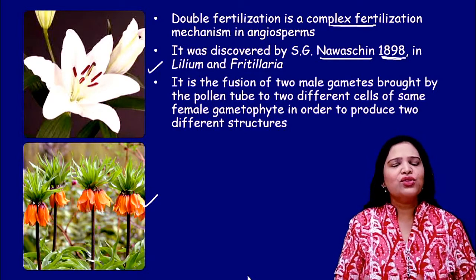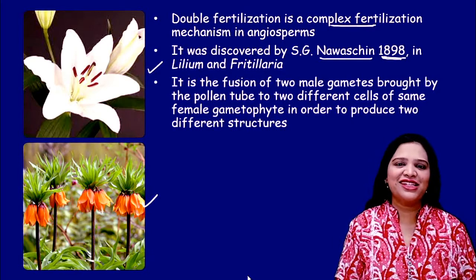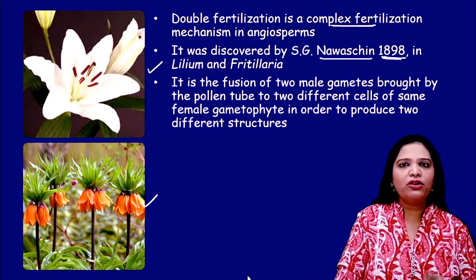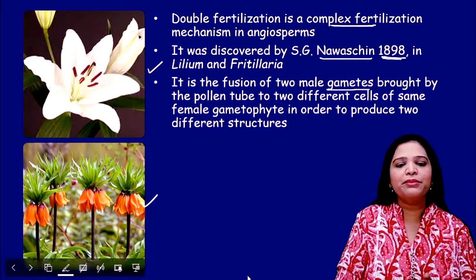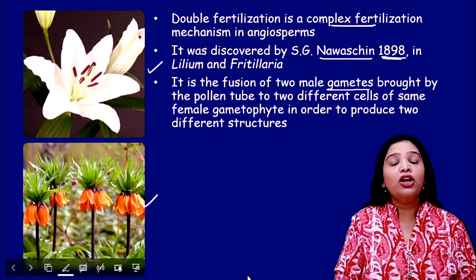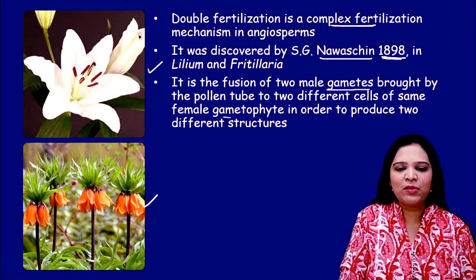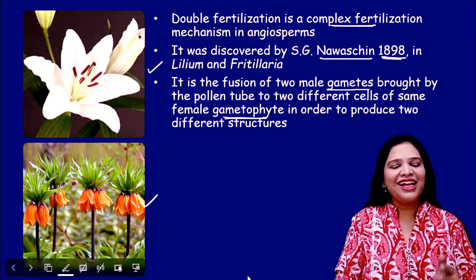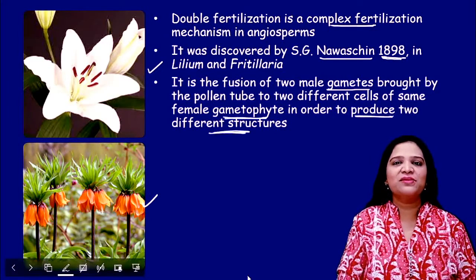What is double fertilization? What is the definition for double fertilization? It is the fusion of two male gametes brought by the pollen tube to two different cells of the same female gametophyte in order to produce two different structures.